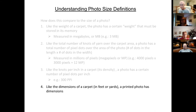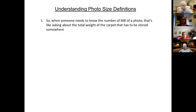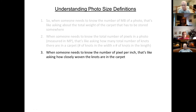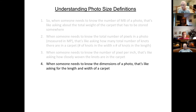And finally, like the dimensions of a carpet in feet or yards, a printed photo has dimensions as well — 16 by 20, 4 by 6. So when someone needs to know the megabytes in a photo, that's like asking the total weight of the carpet. When someone needs to know the total number of pixels in megapixels, that's like asking how many total knots are in the carpet. When someone needs to know the pixels per inch, that's like asking how closely woven the knots are. And when someone needs to know the dimensions of a photo, that's like asking for the length and width of the carpet.